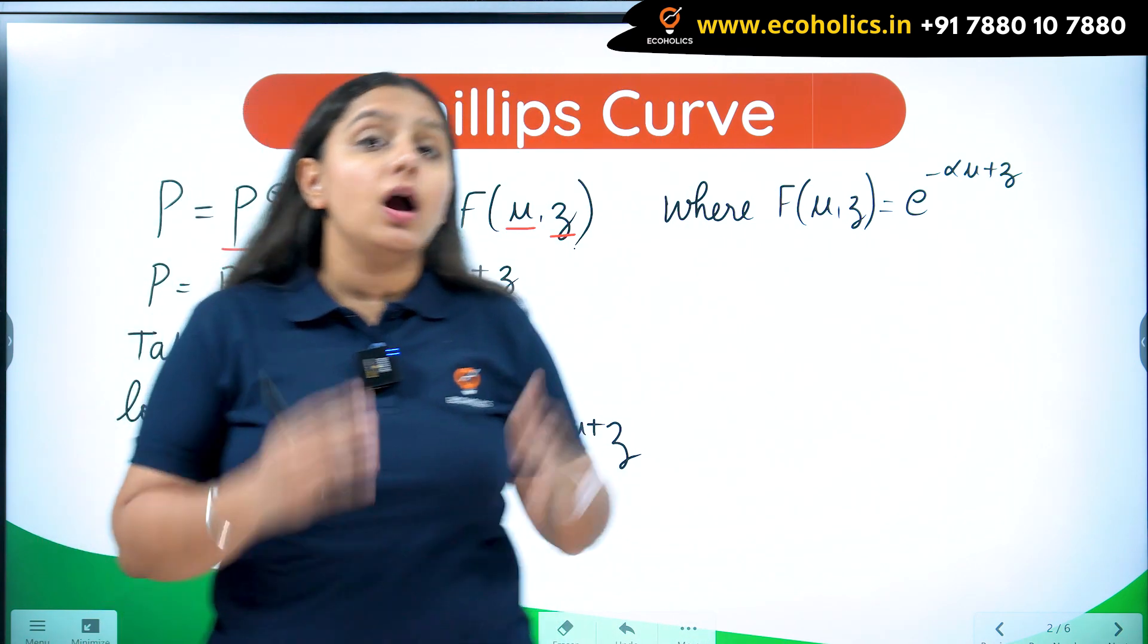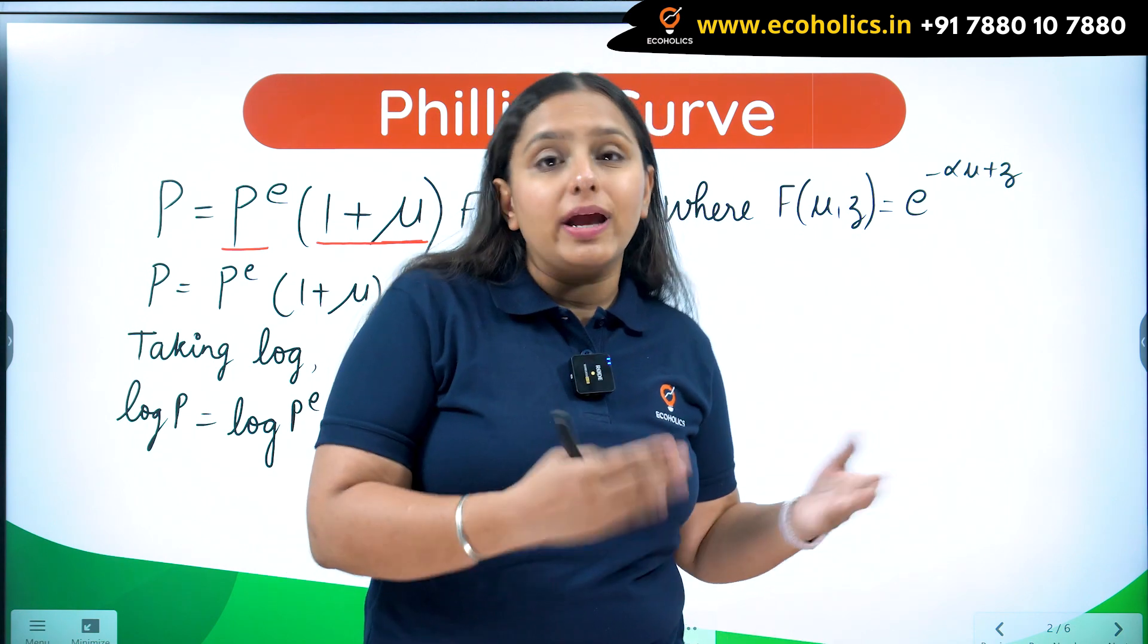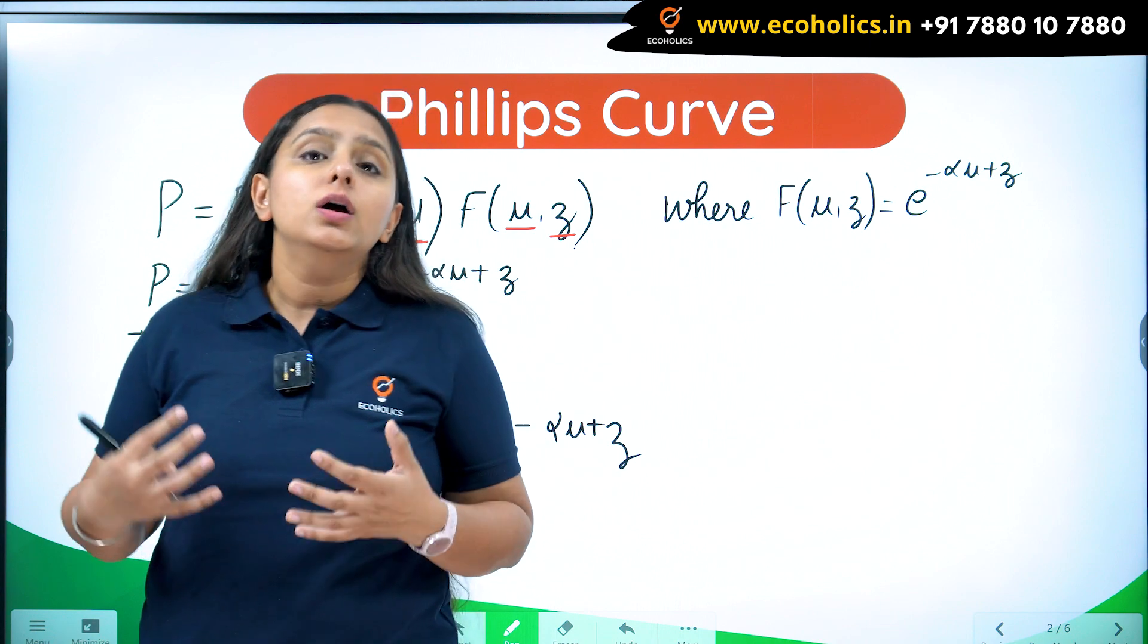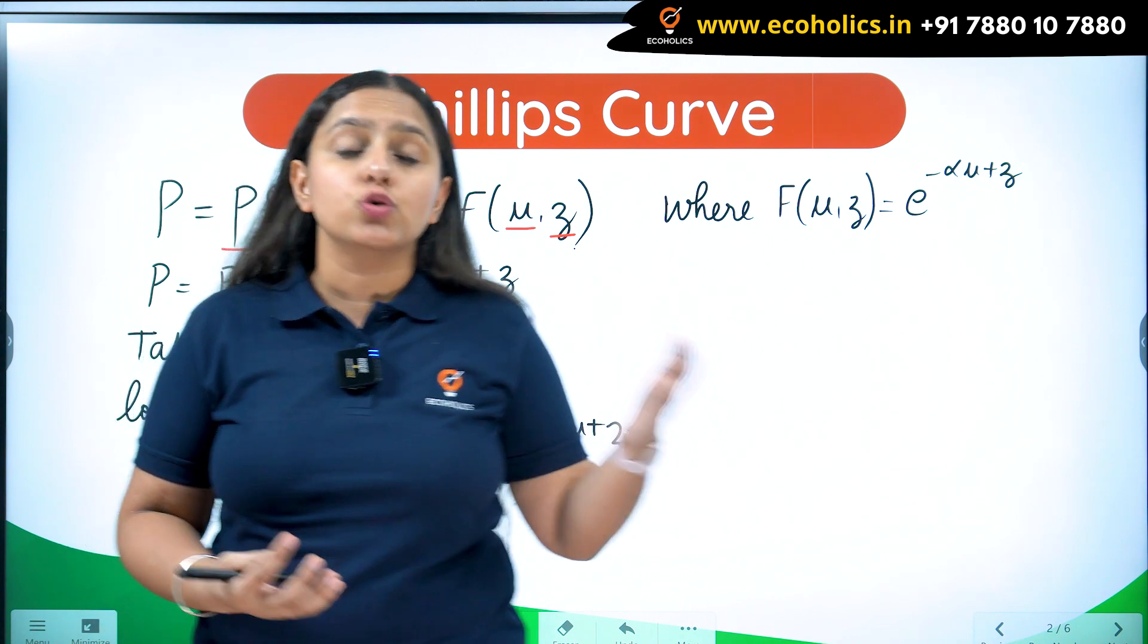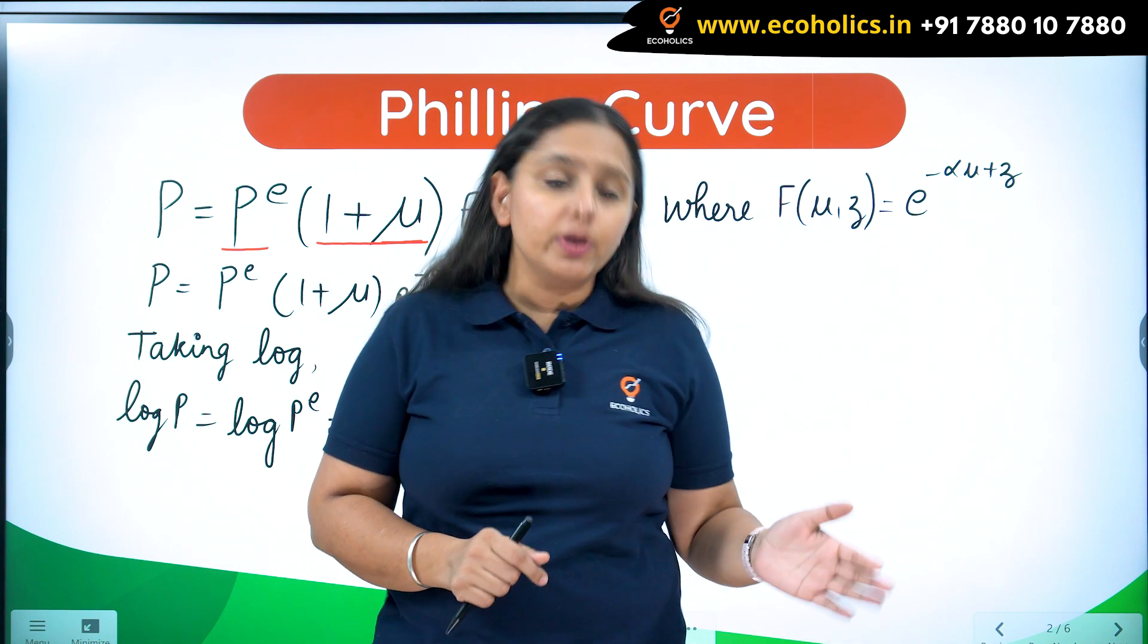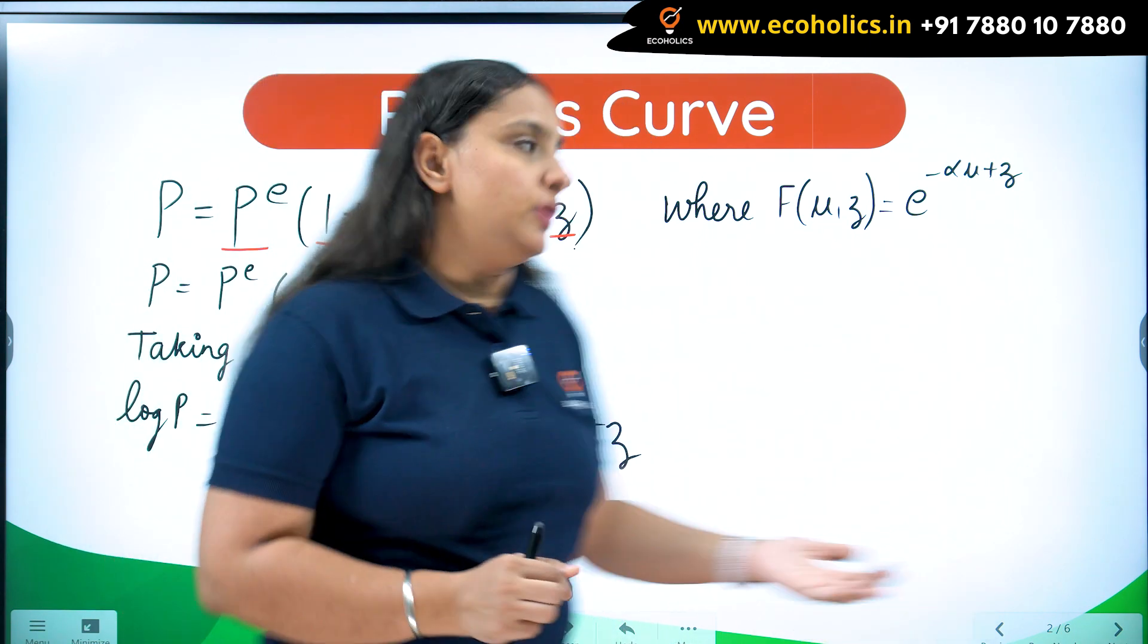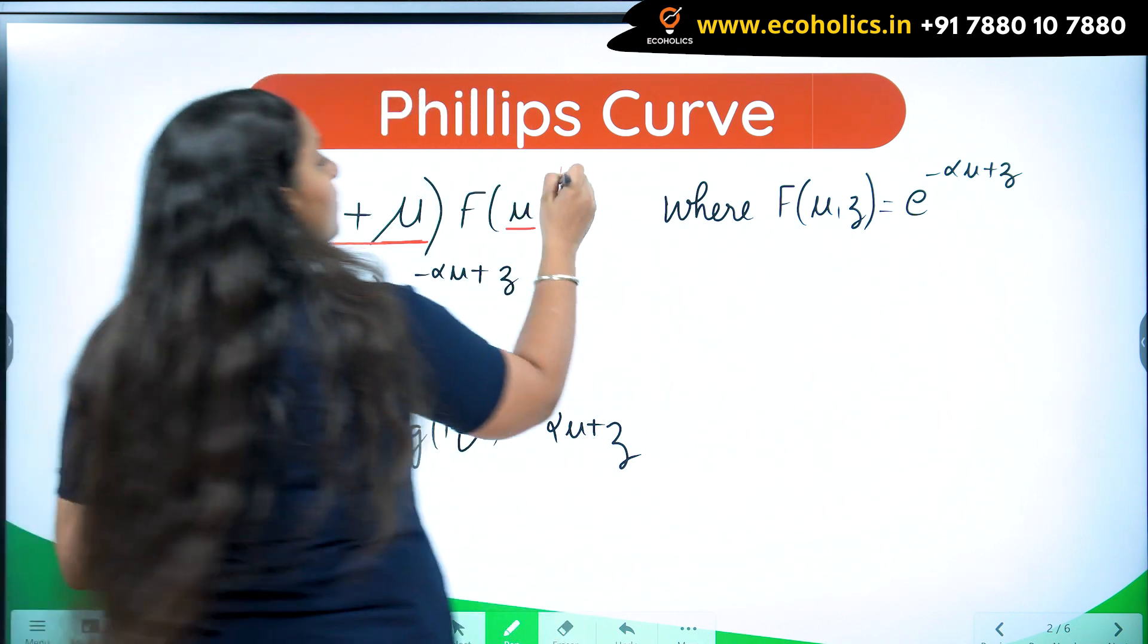If the government is giving higher unemployment benefits, the people who get a job expect higher minimum salary. Higher unemployment benefits mean higher minimum wages will be set in the economy and higher will be the prices. Z is affecting in a positive way.